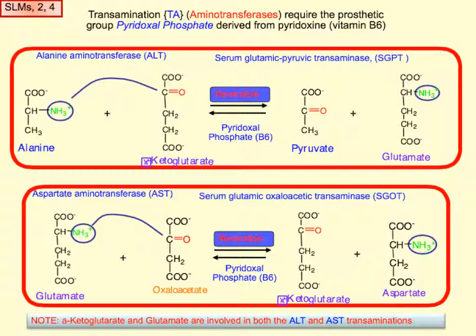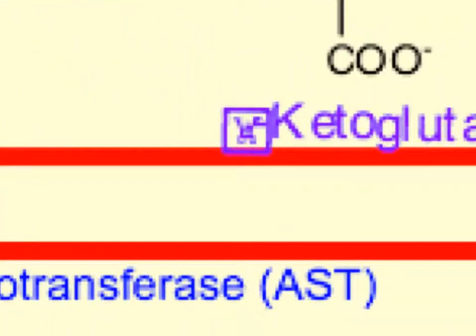Two common transaminases are ALT and AST — for alanine or aspartate — and both pretty much have two different names. AST is also called serum glutamic oxaloacetic transaminase, SGOT, indicating glutamate or oxaloacetate going in, or aspartate aminotransferase, indicating aspartate going in. Both reactions happen inside the liver, so both enzymes are used in the liver function test.